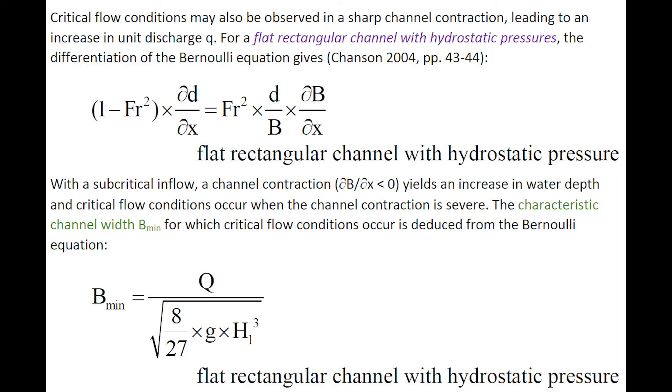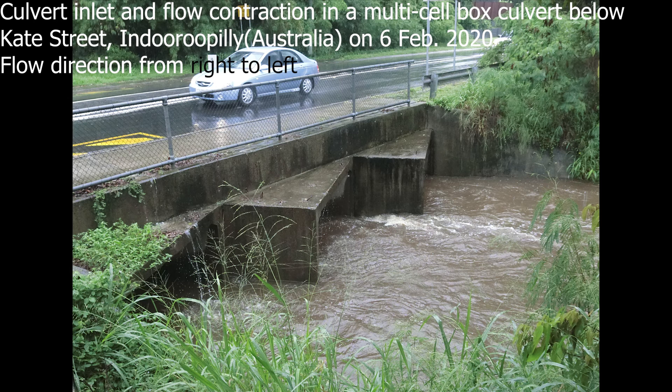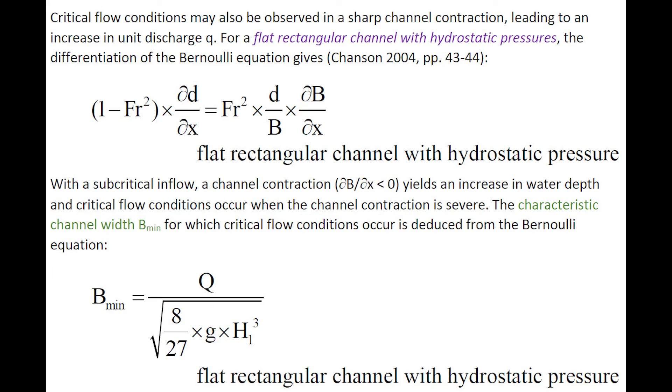With a subcritical inflow, a channel contraction yields an increase in water depth, and critical flow conditions occur when the channel contraction is severe. The characteristic channel width B for which critical flow conditions occur may be deduced from the Bernoulli equation.